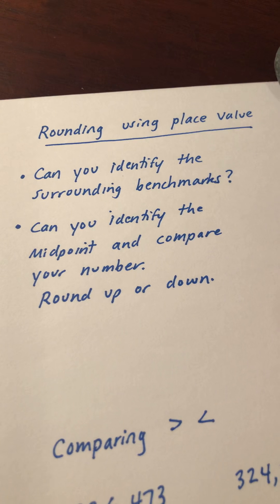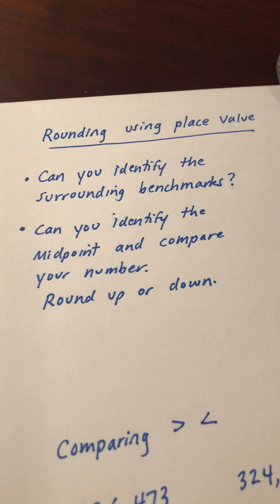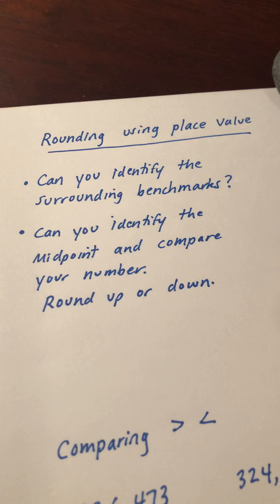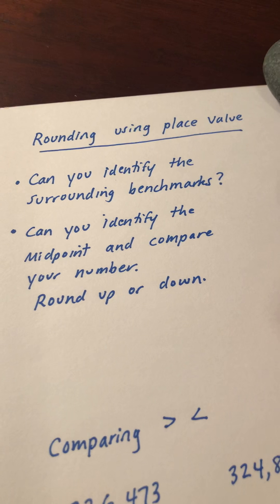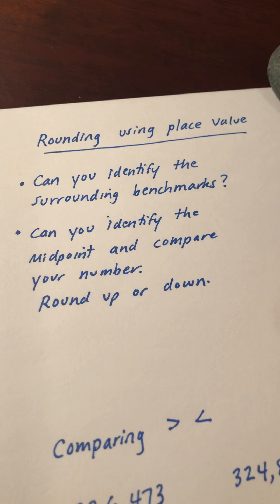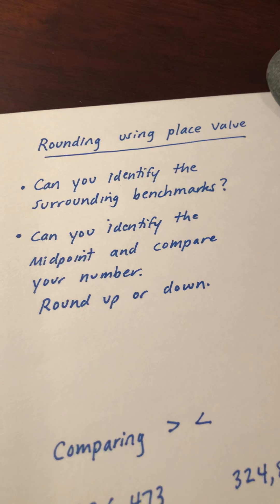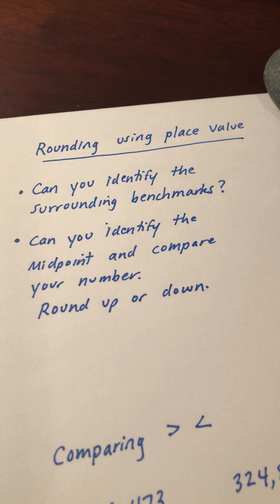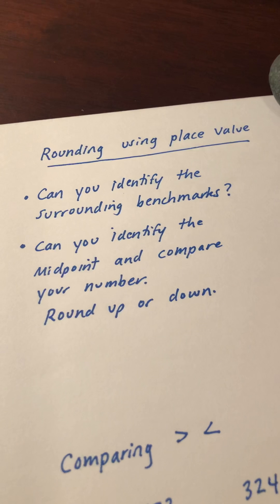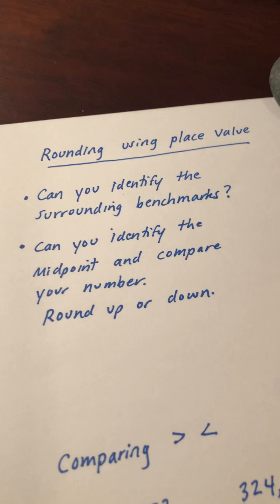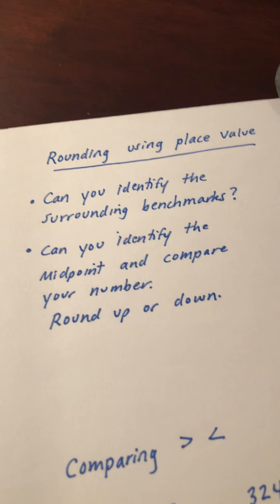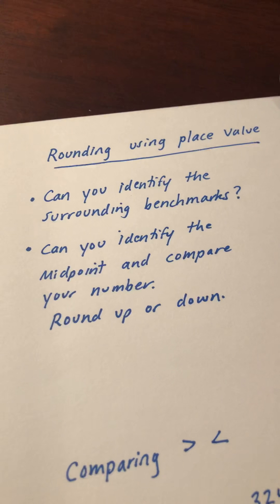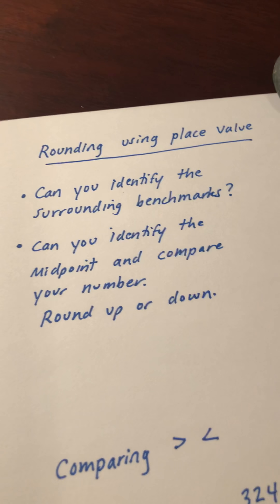Hey everybody, it's Miss Moran and I'm here to talk to you this week about rounding using place value. Students have done some rounding in the past, and a lot of times students come into fourth grade with some rules — very specific rules about five or more round up, four or less round down. But when we start to get into numbers all the way into the hundred thousands and up into the millions, that rule is sometimes confusing because there are so many digits and they lose track of what number they're supposed to be rounding up or down.